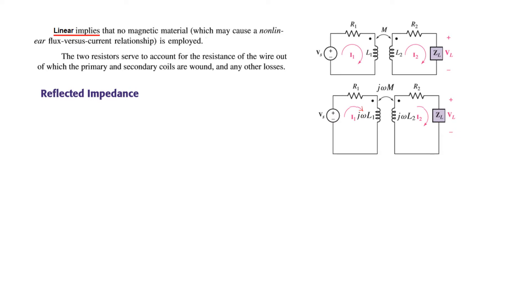To proceed further, we convert the time domain circuit into phasor domain or frequency domain. We have multiplied the inductances with j omega. Also to take care of all the voltages, we have to keep in mind that there are mutually induced voltages in both, as discussed in the previous video.